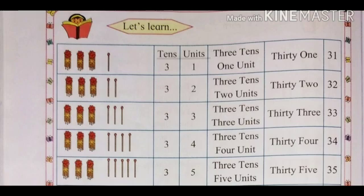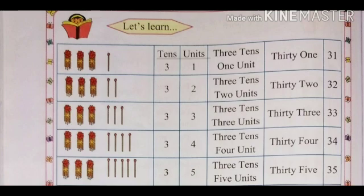Three bunches of math sticks means 30 math sticks. With 3 math sticks: 33. That is 3 tens and 3 units — 33. The spelling of 33 is T-H-I-R-T-Y (30) T-H-R-E-E (3): 33.